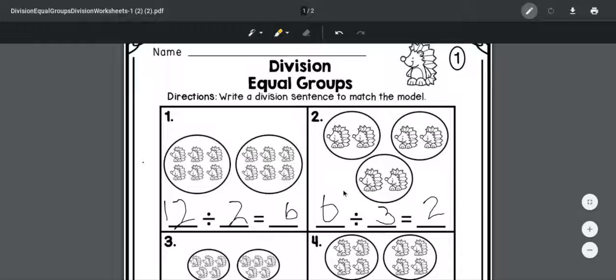Just take your time and understand that it's the total amount divided by how many groups, and then how many is in each group. Okay, if you have questions, make sure you post them for me. Good job.